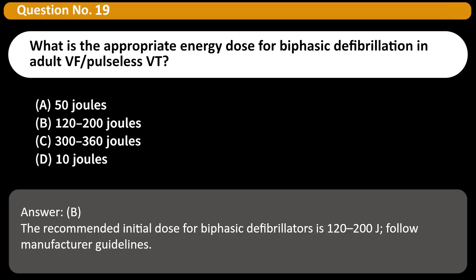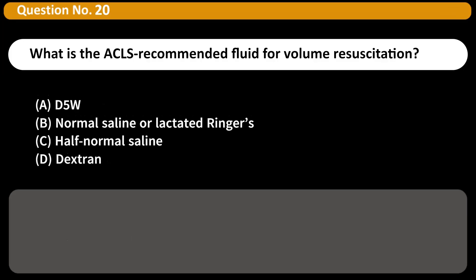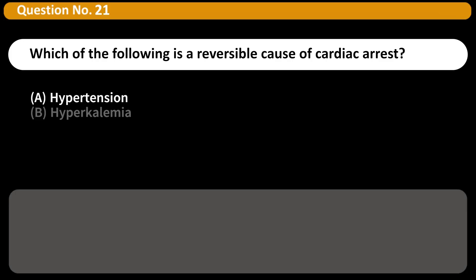What is the ACLS-recommended fluid for volume resuscitation? A. D5W. B. Normal saline or lactated Ringer's. C. Half-normal saline. D. Dextran. Answer: B. Isotonic crystalloids such as normal saline or lactated Ringer's are preferred for volume resuscitation.